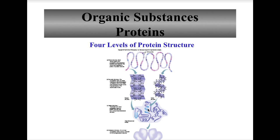Quaternary structure involves the interaction between different amino acid chains. For example, hemoglobin (figure 14.8 on page 533) is composed of four amino acid chains condensed into a functional quaternary structure. It is important for homeostasis to be maintained because if you go outside the proper pH or temperature range for a protein, you can destroy it — this is called denaturation: the loss of the protein's three-dimensional shape, causing it to unravel and lose its function.